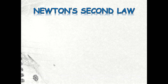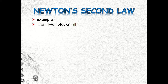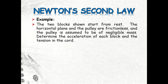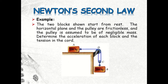Hello class, welcome once again to our session for today. We'll continue our discussion on examples of Newton's second law of motion. This time we will solve the third example. The two blocks shown start from rest. The inclined plane and the pulley are frictionless and the pulley is assumed to be of negligible mass. We have block A with a mass of 100 kilograms and block B with a mass of 300 kilograms.